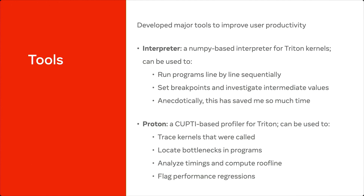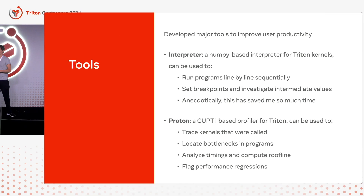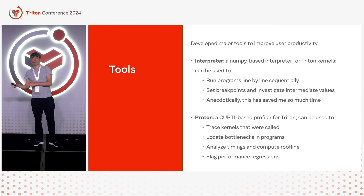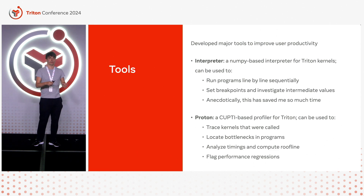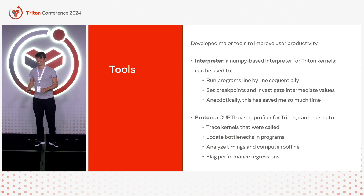Proton is also good because it's allowed us to write much better regression testing. You can define a neural network forward pass, run it through Proton, and see the breakdown of all the kernels that run and their runtime. Then you can compare that against a reference to see if you've decreased performance in CI. That's pretty well integrated.